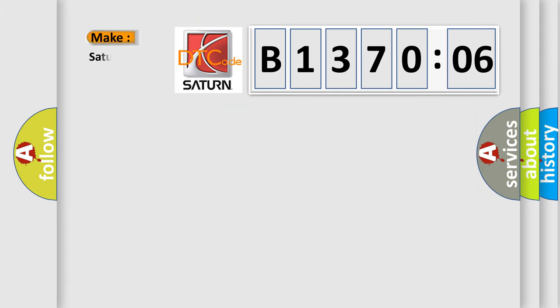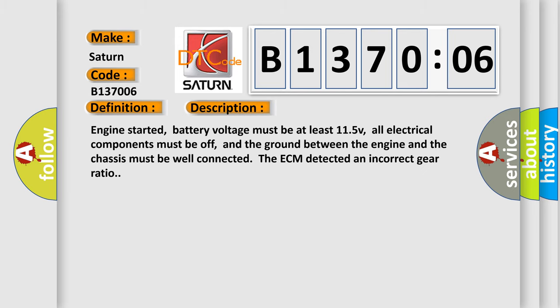So, what does the diagnostic trouble code B137006 interpret specifically? The basic definition is Gear incorrect ratio. And now this is a short description of this DTC code: Engine started, battery voltage must be at least 11.5V, all electrical components must be off, and the ground between the engine and the chassis must be well connected. The ECM detected an incorrect gear ratio.